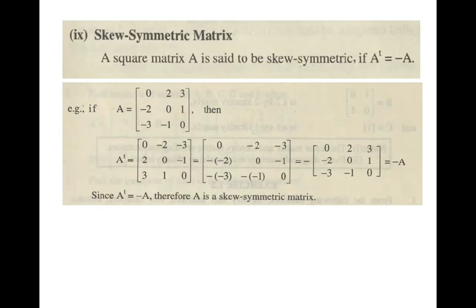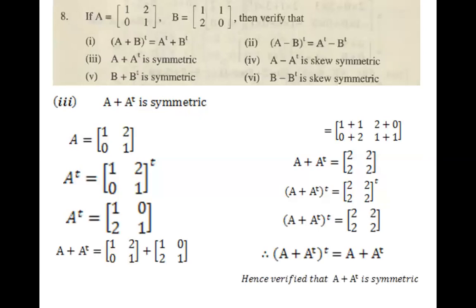The most important thing is how we follow the procedure. For that procedure, we have question number 8 from Exercise 1.3. We are given two matrices A and B of order 2×2, and we are asked to verify six parts. I am going to do part 3: verify that A plus A^T is symmetric. The statement we have to prove — verify — is that A + A^T is symmetric.